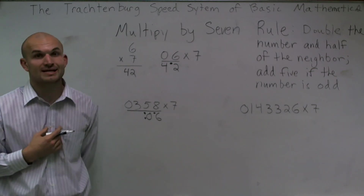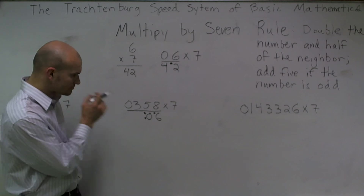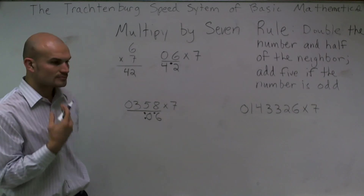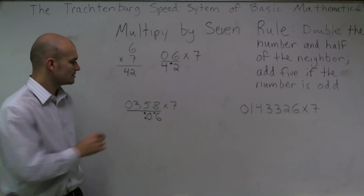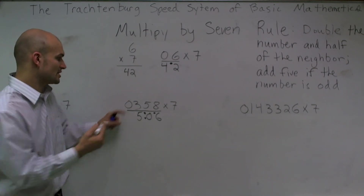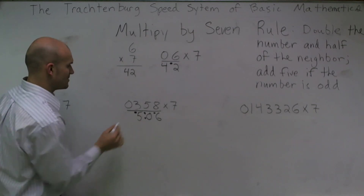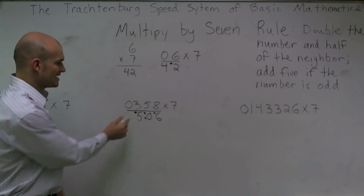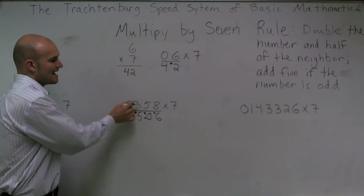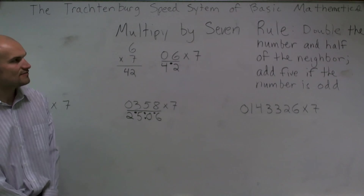Then I look at 3. It's odd, so I need to add 5. I double my 3, which gives me 6, add 5, which gives me 11. Then I add half of 5, which is 2. So 11 plus 2 is 13. Add my 2 carried-over 1s, which brings it to 15 — so I write 5 and carry 1. Then I go to 0. I double 0, which gives me 0. Add half of my neighbor 3, which is 1, plus the carried 1, which gives me 2. So the final answer is 2,506.